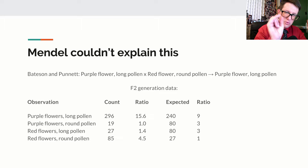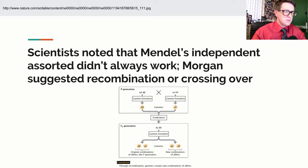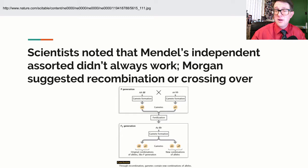An American named Thomas Hunt Morgan looked at these data and his own experiments and concluded that maybe these genes aren't independently assorting because they're physically connected together. Maybe they're on the exact same chromosome — or not only on the same chromosome, but really close to each other on it. And something is happening on that chromosome that makes them every once in a while trade spots, especially in a heterozygous condition. That phenomenon we call crossing over or recombination.